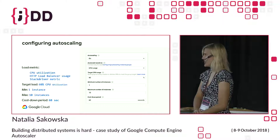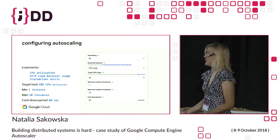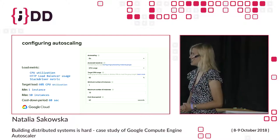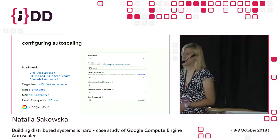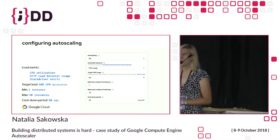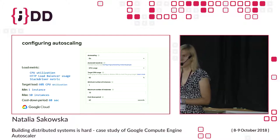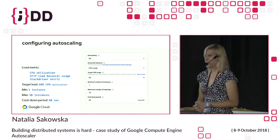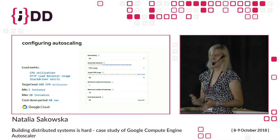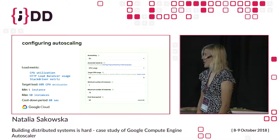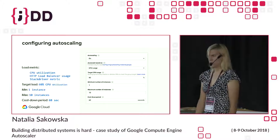Let's stick to a simple example. CPU and HTTP load balancing usage should sound quite obvious. A Stackdriver metric is any metric that can be exported — either an infrastructural one, like bytes sent by an instance or the length of a Pub/Sub queue, or a custom metric defined and exported by the user. It can be any time series — even temperature, if you think it makes sense.